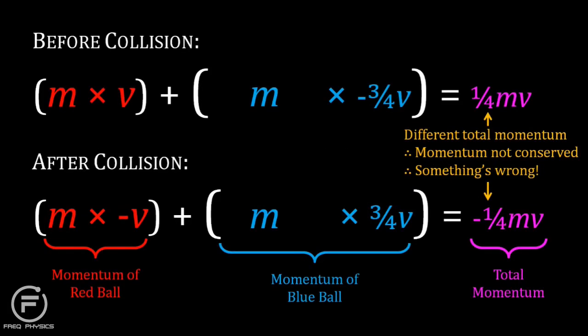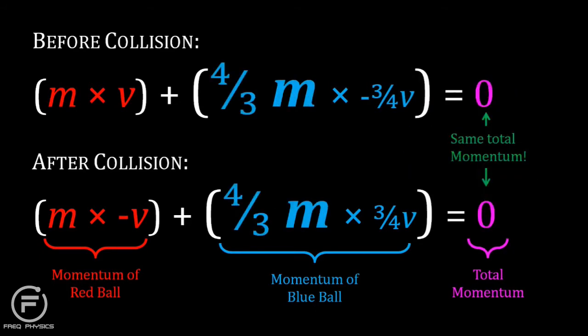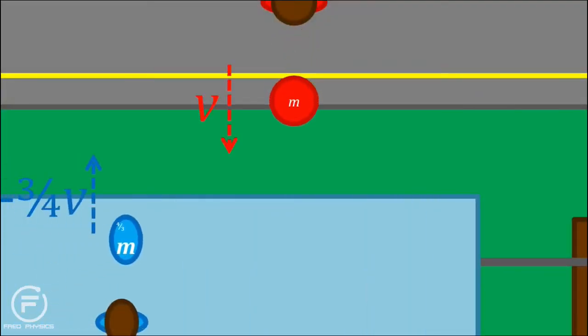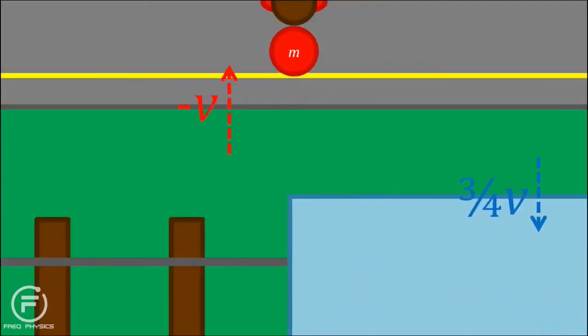In the collision, momentum, which is equal to mass times velocity, must be conserved. And the only way this can happen is if the mass of the blue ball is greater than the mass of the red ball. If I display the masses of the balls, you'll see the blue ball weighs four thirds as much as the red one, in this case.